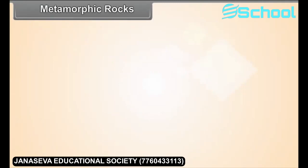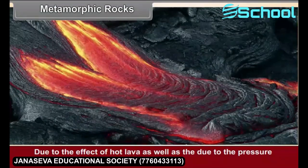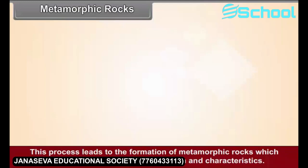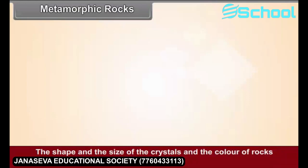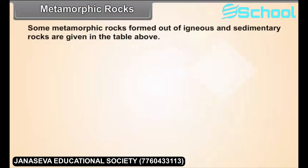Metamorphic rocks: Due to the effect of hot lava as well as due to the pressure caused by Earth movements, the crystals in the original rocks — igneous or sedimentary — get crystallized again. This process leads to the formation of metamorphic rocks, which have an altogether different composition and characteristics. The shape, size of the crystals, and the color of the rock change. As these rocks are produced through the process of recrystallization, metamorphic rocks do not contain fossils.